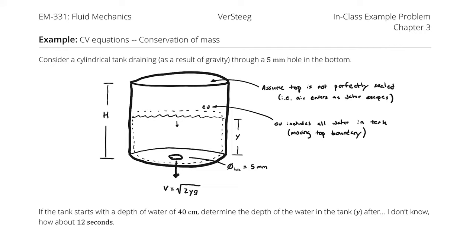Consider a cylindrical tank draining as a result of gravity through a 5mm hole in the bottom. If the tank starts with a depth of water of 40cm, determine the depth of the water in the tank after 12 seconds.